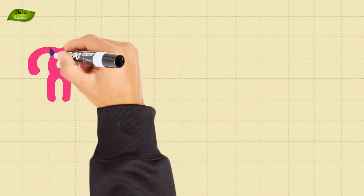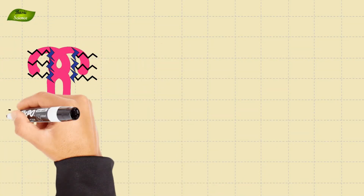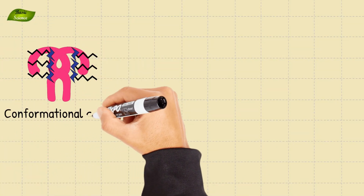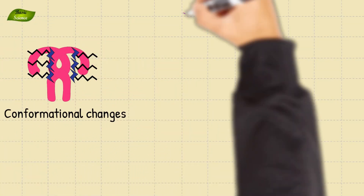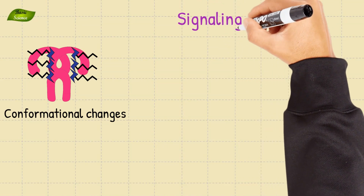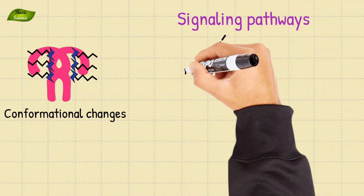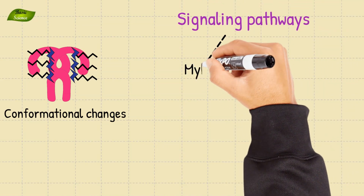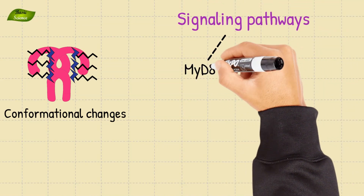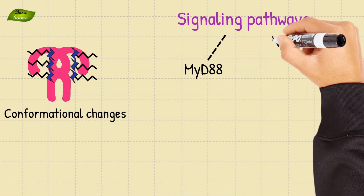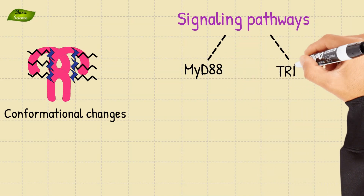Upon LPS binding, TLR4 undergoes conformational changes, activating two main signaling pathways: the MyD88-dependent pathway and the TRIF-dependent pathway.